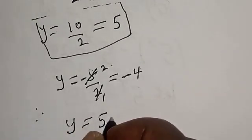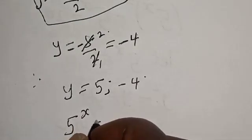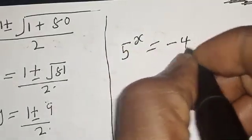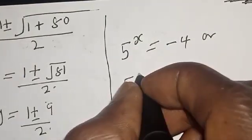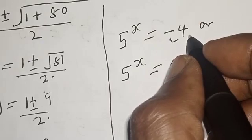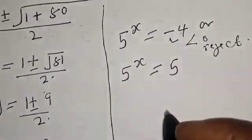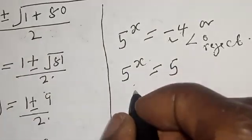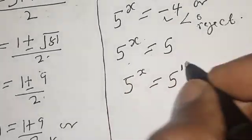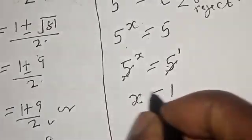Recall that 5 raised to power s equals y, so y equals 5 or y equals negative 4. From 5 raised to power s equals negative 4: this is less than zero, so we reject it, because 5 raised to any power cannot be negative. The true solution is 5 raised to power s equals 5, which equals 5 raised to power 1. Since the bases are the same, s equals 1. That is our final answer.